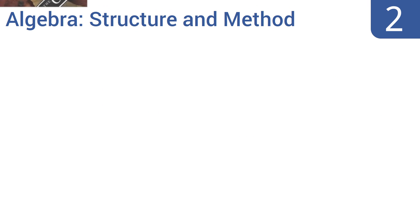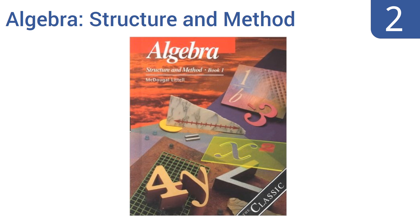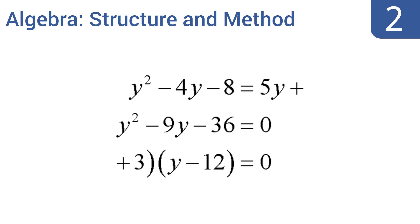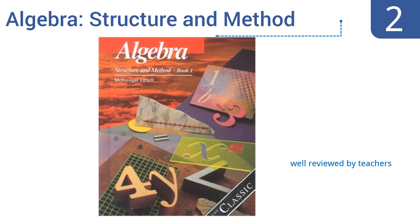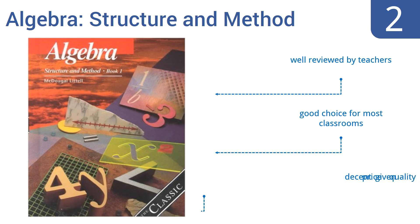At number 2, Algebra Structure and Method is part of a series of textbooks that build upon each other. Students will start with the basics of algebraic math and work their way through concepts including factoring and variables, slowly gaining the information needed for advanced studies.